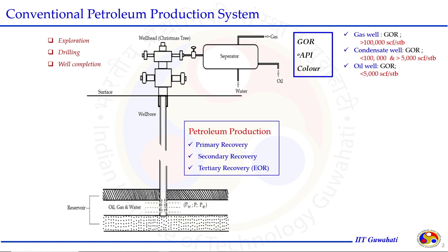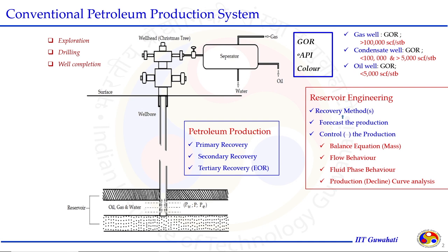Once the well is ready to produce, the production happens in three stages: primary production, secondary production, and tertiary production. The reservoir engineering approach is required to understand the recovery methods, forecasting the production profile — how long the well is going to produce and at what rate — as well as controlling the production. Controlling means enhancing the production from a particular well, and this is accomplished with the help of understanding the flow behavior, fluid phase behavior, and finally, production decline curve analysis to forecast the production profile.